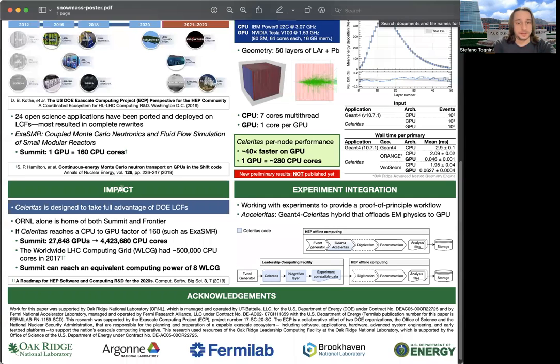Regarding the impact of our project, previous results from Shift, a neutron transport code for nuclear reactors, show that on Summit, one GPU card can perform the same work as 160 CPU cores running in parallel. If we can reach a similar speedup factor with Celeritas, Summit alone would have a computing power eight times larger than the worldwide LHC computing grid based on 2017 data.